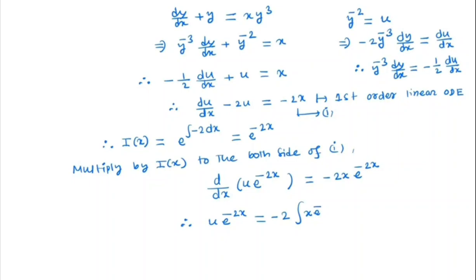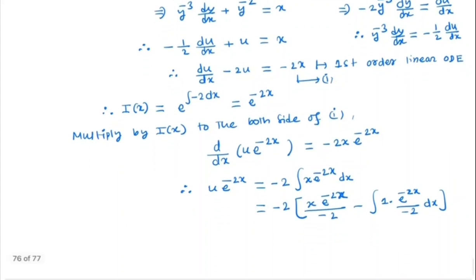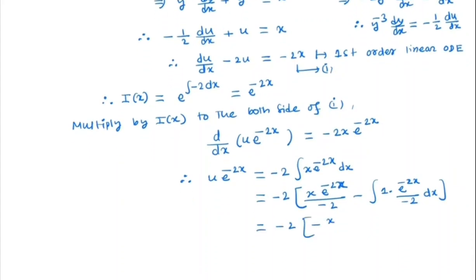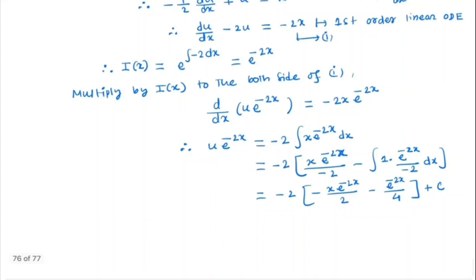Integrating both sides, u · e^(minus 2x) = integral of minus 2x · e^(minus 2x) dx. Using integration by parts: this equals minus 2 times [x · e^(minus 2x) / (minus 2) minus the integral of e^(minus 2x) / (minus 2) dx], which gives x · e^(minus 2x) / 2 plus the integral of e^(minus 2x) / 4, so u · e^(minus 2x) = minus 2[x/2 minus 1/4] · e^(minus 2x) + C.